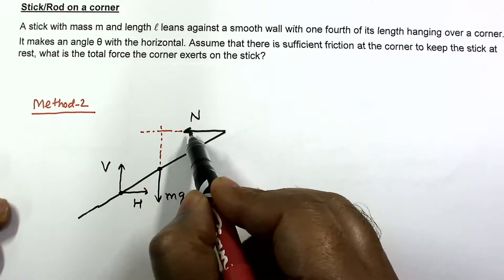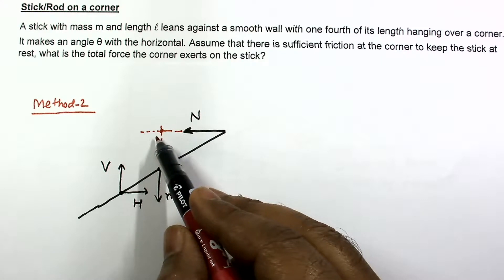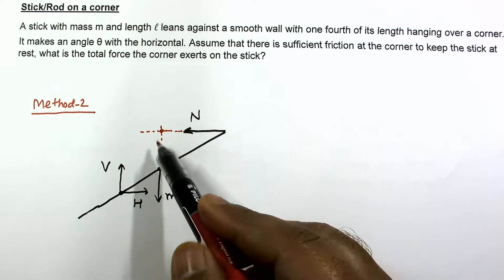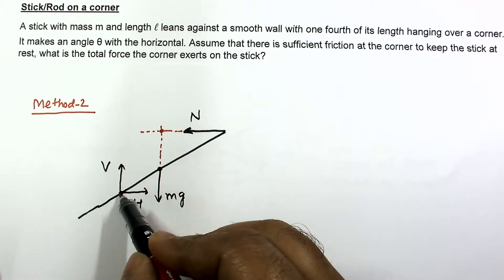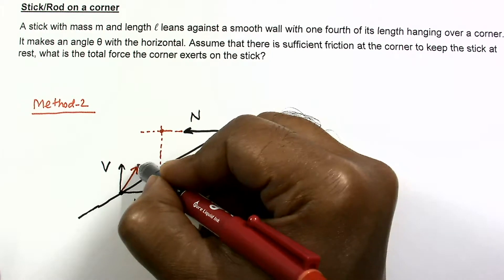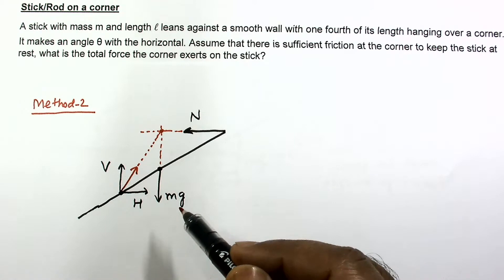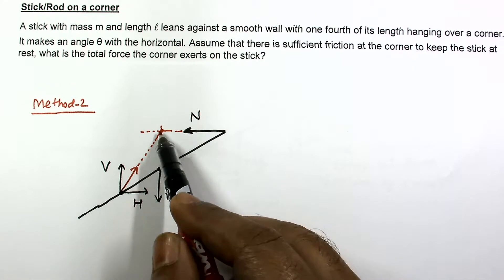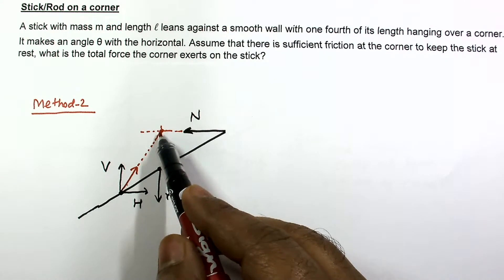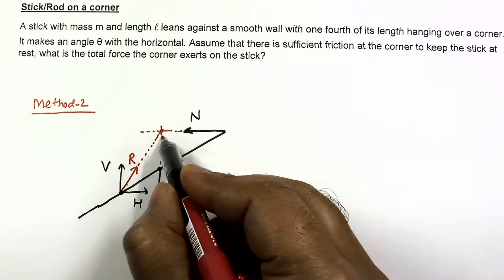The lines of action of MG and the normal reaction intersect at a point. For net torque equal to zero, if I take torques about this intersection point, then the torque due to normal is zero and the torque due to gravity is also zero. For the third force — the resultant R exerted by the corner — its line of action must pass through this point. If it did not, it would create a net torque about this point, which cannot happen since the system is in equilibrium.